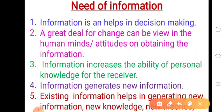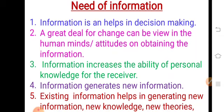The fourth point is that information generates new information — with the help of information we can create new information or increase our knowledge. The fifth point is that existing information helps in generating new information, new knowledge, and new theories. So existing information helps in various ways: collecting new information, increasing knowledge, and building new theories. All these five points are considered as the need of information.